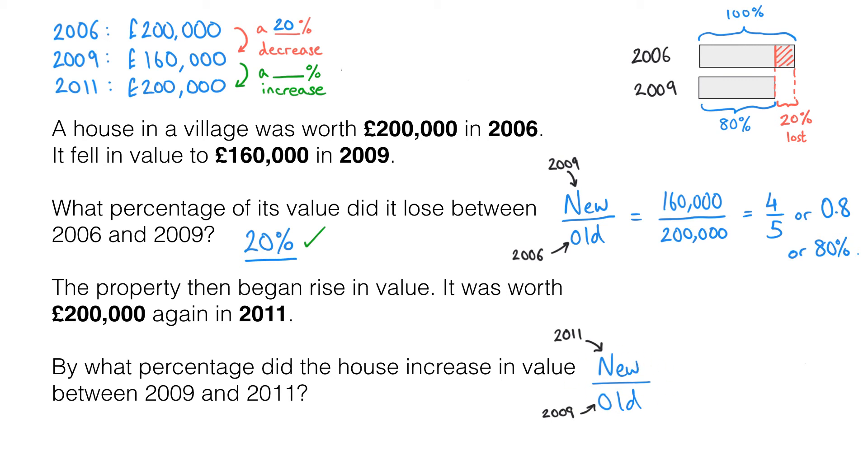Let's come back to the second question. So the new value over the old value is 200,000 over 160,000, and that simplifies to 5/4 or as a decimal 1.25. Now as a percentage that is 125%.